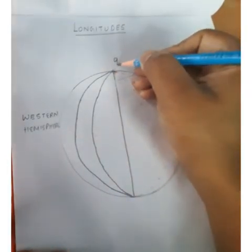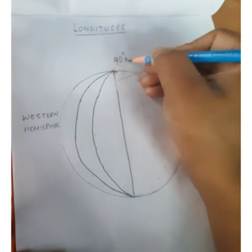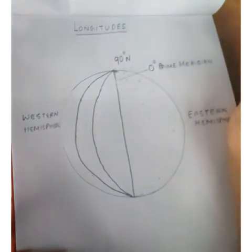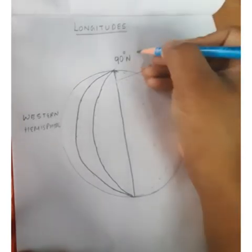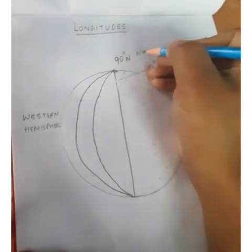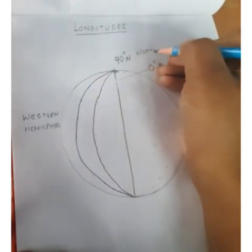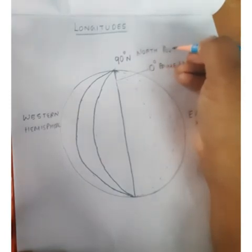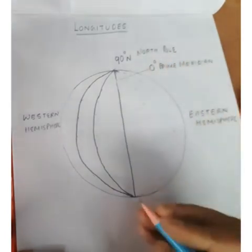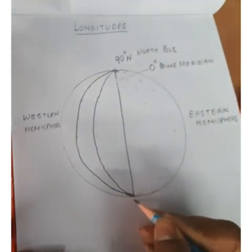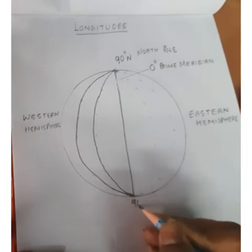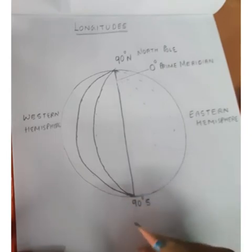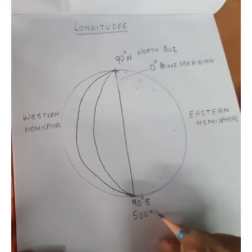Now write here '90 degree N' — capital N means north pole. At the bottom of the circle, write down '90 degree S' — capital S means south pole.